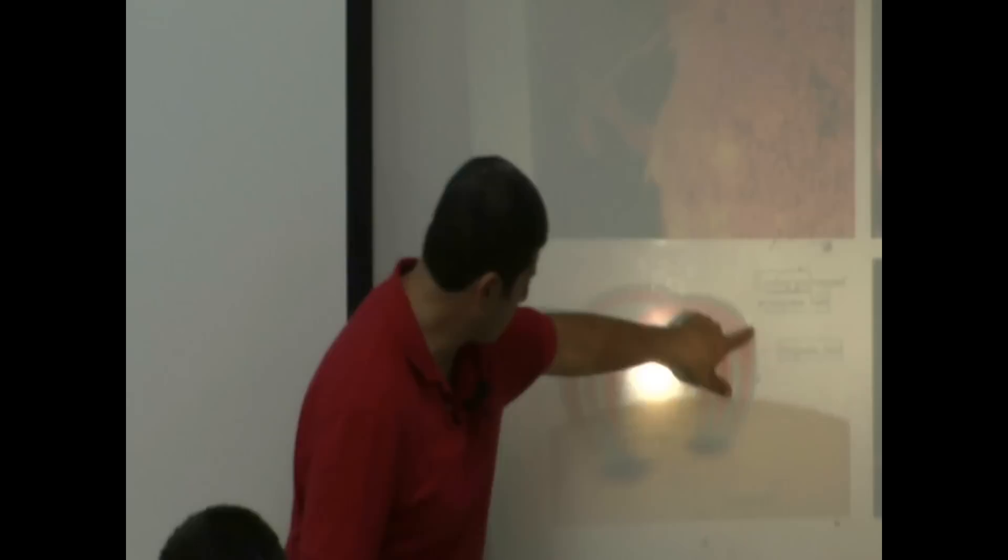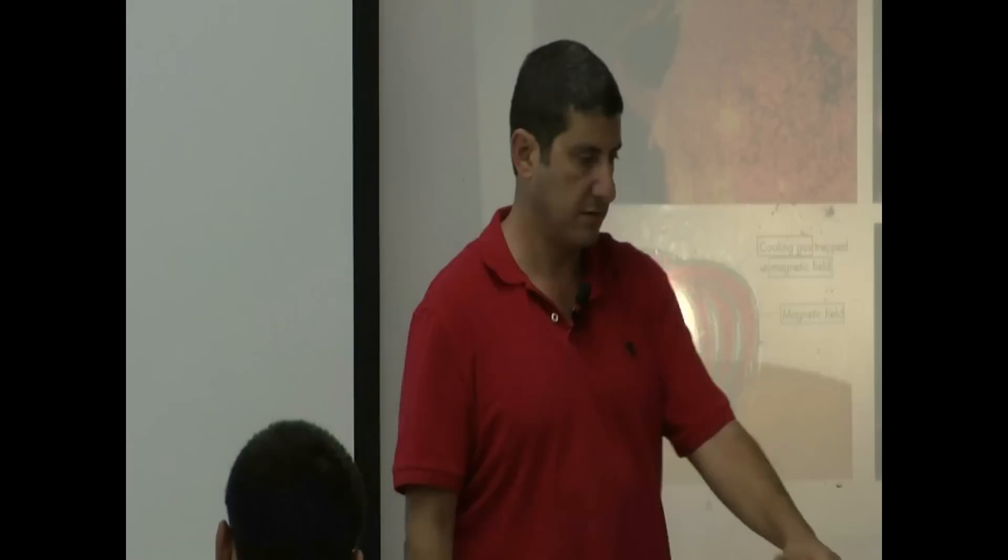Usually the prominence also starts from the sunspot and then goes to the sunspot. See cooling gas trapped in magnetic field, and then this is the magnetic field. And then the gas starts rising, rising, rising like that. Isn't that cool? And then again, the earth for comparison.